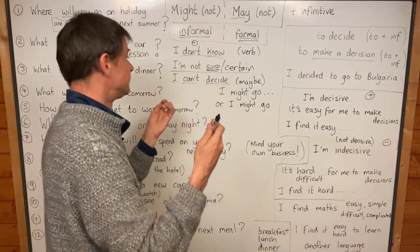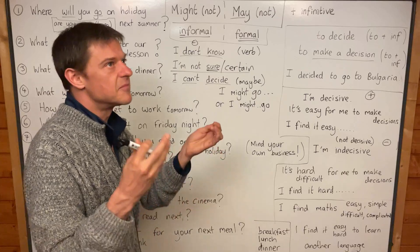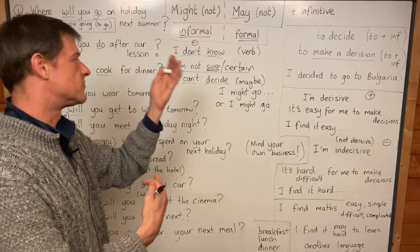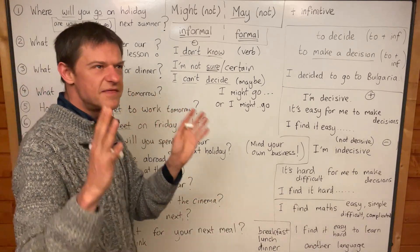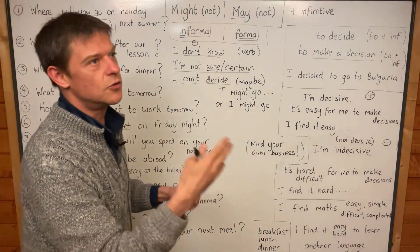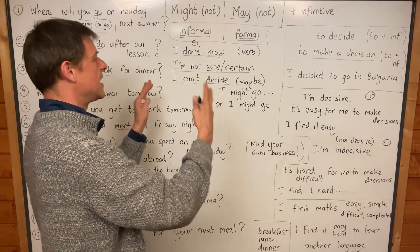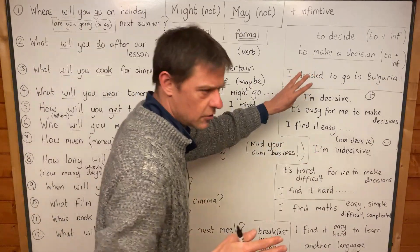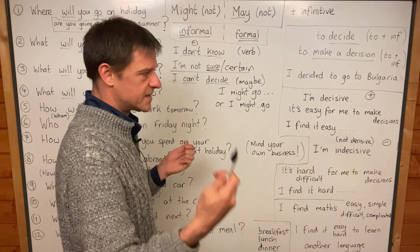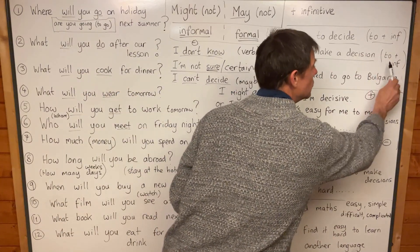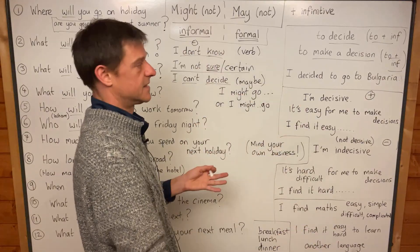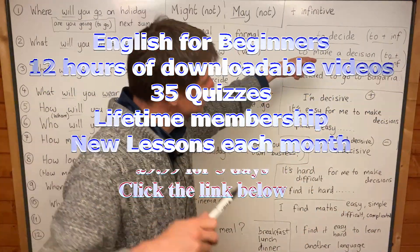For example, at first I don't know. I might go to Spain, I might go to France, I might go to Italy. But then I decide — I decide to go to Italy. I choose Italy. I won't go to Spain, I won't go to France. I will go to Italy. I make a decision to go, to travel, to fly to Italy. Two plus infinitive.